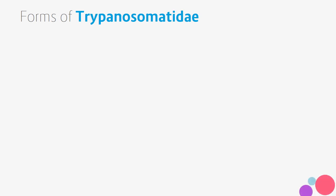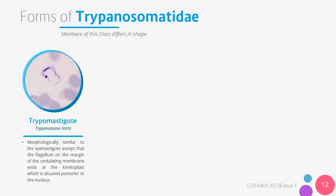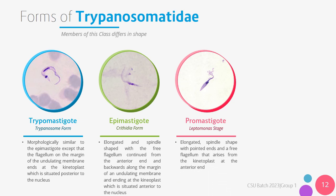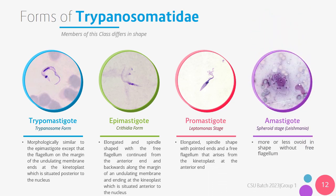Members of the Trypanosomatidae have different forms. There are four forms: the trypomastigote or trypanosome form, which has the flagellum on the margin of the undulating membrane and the flagellum ends at the kinetoplast posterior to the nucleus. The epimastigote or crithidia form has the free flagellum continuing from the anterior end backwards along the undulating membrane, ending at the kinetoplast which is now anterior to the nucleus. The promastigote or leptomonas stage is elongated and spindle-shaped with pointed ends and a free flagellum arising from the kinetoplast at the anterior end. Lastly, the amastigote or spheroid stage is ovoid in shape and does not have a free flagellum.